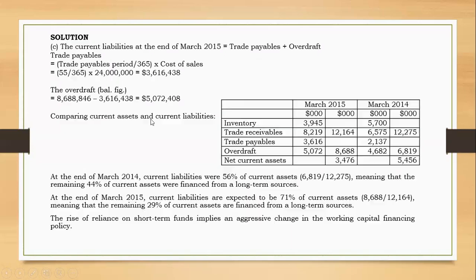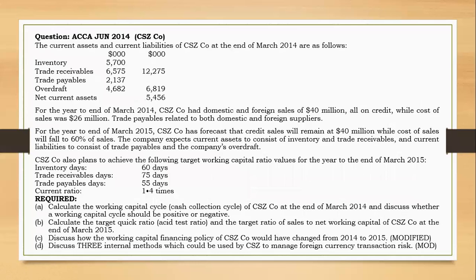That was a very important point. Now let's move to part D and finish the question. Part D asks: discuss three internal methods which could be used by the company to manage foreign currency transaction exposure. Since the company had both domestic and foreign suppliers, there are ways to internally manage transaction rates.